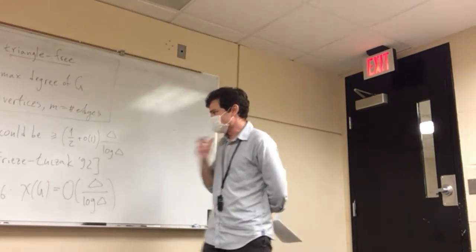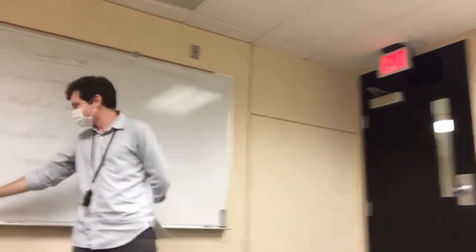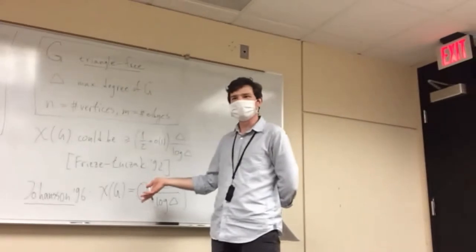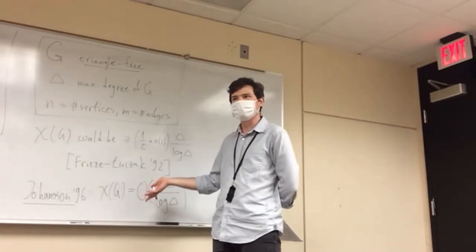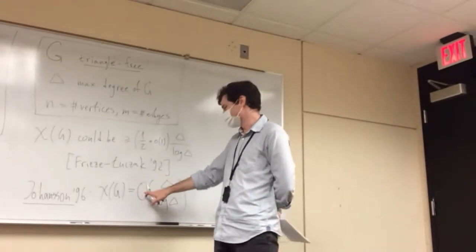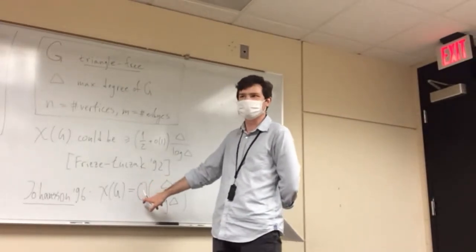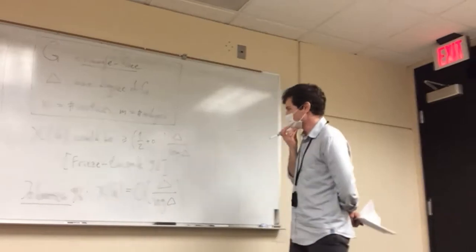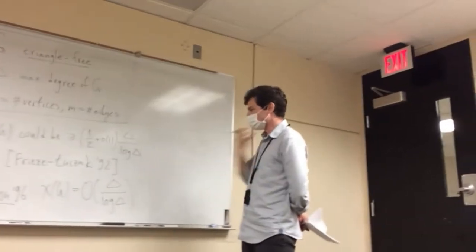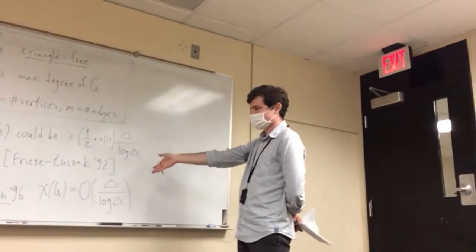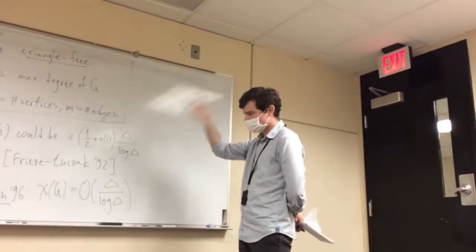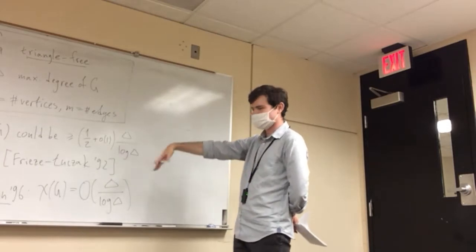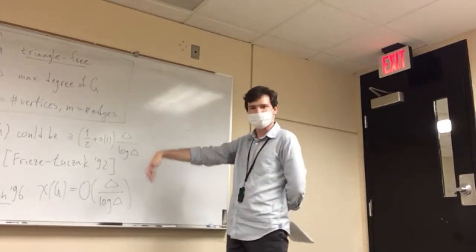This is a curious paper — it was never published and is impossible to find. Different sources cite different constant factors, so we don't actually know what the constant was in Johansson's proof, but it was some value, maybe around 10 or so, which has been slowly improved over time.